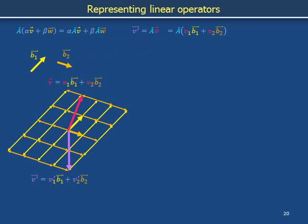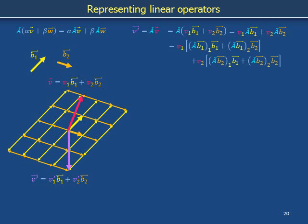Explicitly substitute v with its description in terms of the basis set. Because a is a linear operator, we can apply a to both parts of this sum and move it through the scalar multiplying factors. The result of applying a to basis vector b1 can itself be expressed in terms of a b1 part and a b2 part, with coefficients written a-hat b1 sub 1 and a-hat b1 sub 2. Similarly, a-hat b2 can be expressed in terms of yellow and orange pieces, with notation a-hat b2 sub 1 and a-hat b2 sub 2.